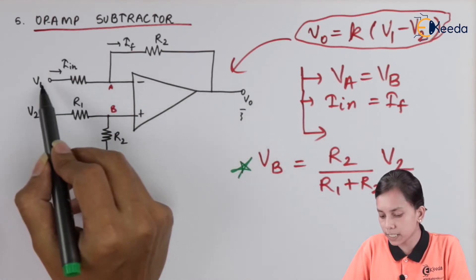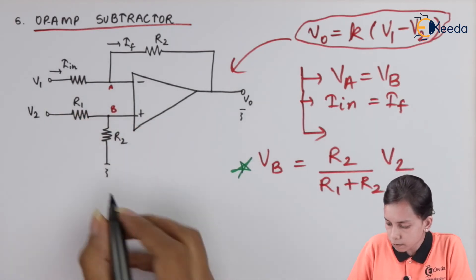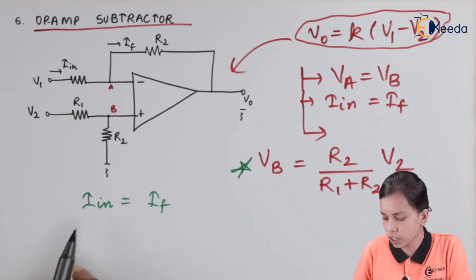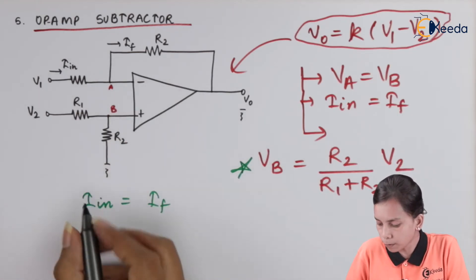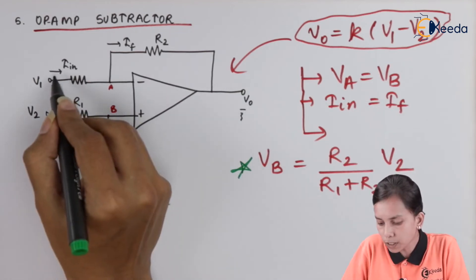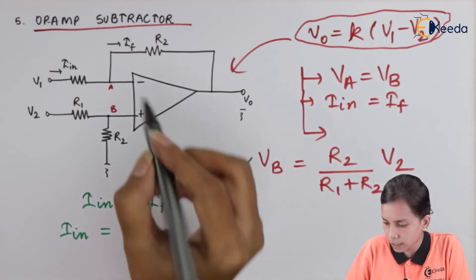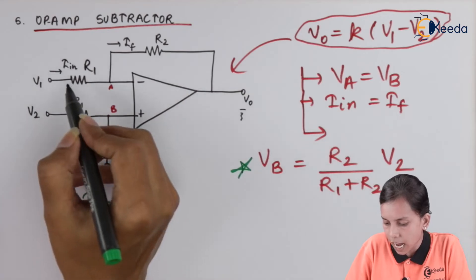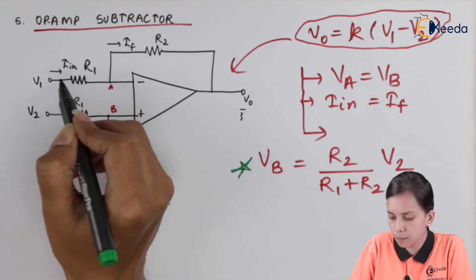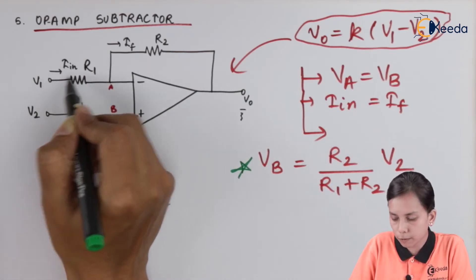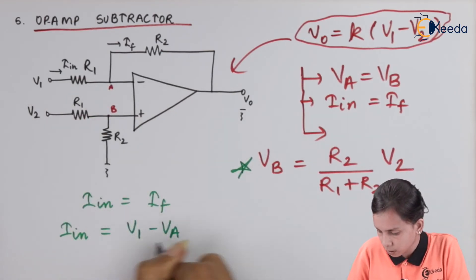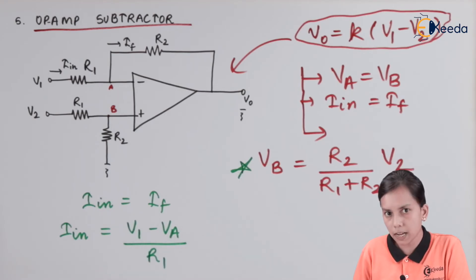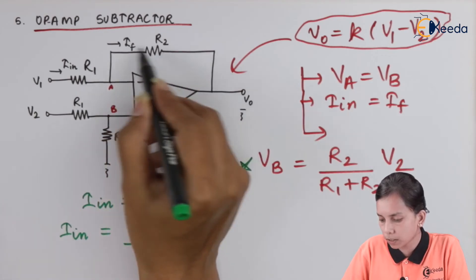We will use the same approach as in previous cases: I_input equals I_F. We start by calculating I_input, which is the current flowing through R1. The potential difference across R1 is V1 minus VA, so I_input = (V1 − VA) / R1.